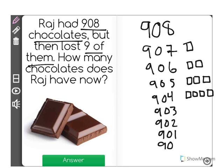7 will be 901. The 8th chocolate he loses means he only has 900 left, but it says he lost 9 of them. So when he loses the 9th chocolate, he only has a total of 899 chocolates left.